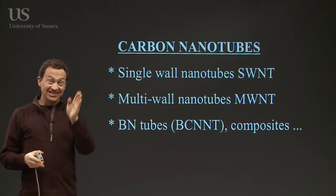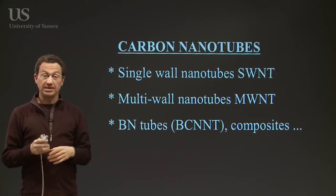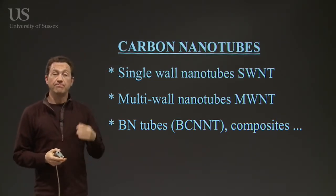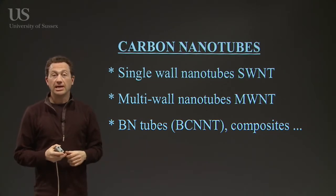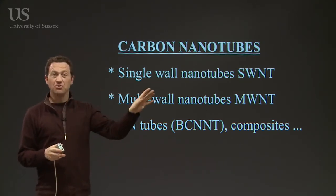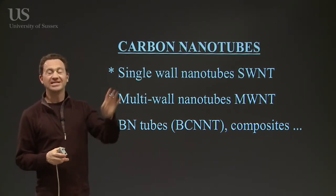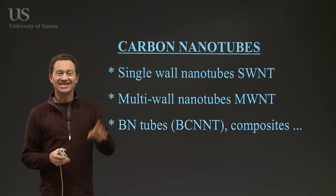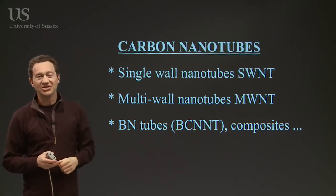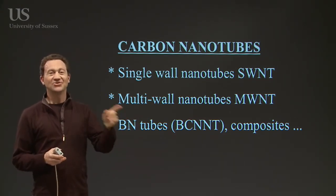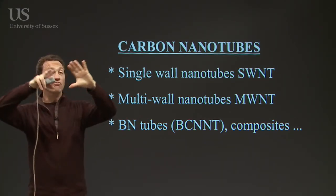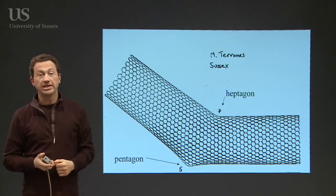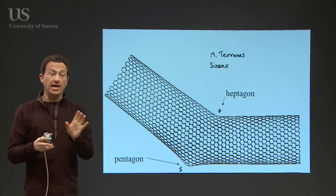In principle, you might be able to have a conducting nanotube surrounded by an insulating one. You can make nanotubes not just with carbon, but also with boron and nitrogen. So you can have single-walled nanotubes, called SWNTs, multi-walled nanotubes, called MWNTs, and boron-carbon-nitrogen tubes — a whole array of different carbon structures with fascinating mechanical and electrical properties.